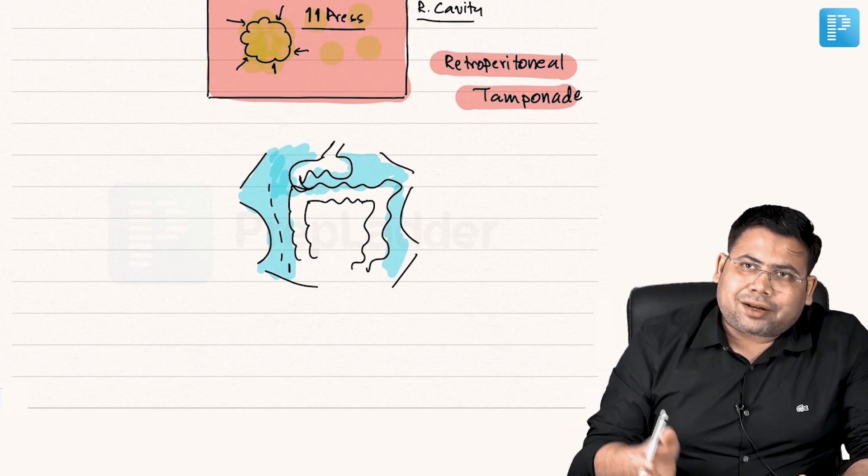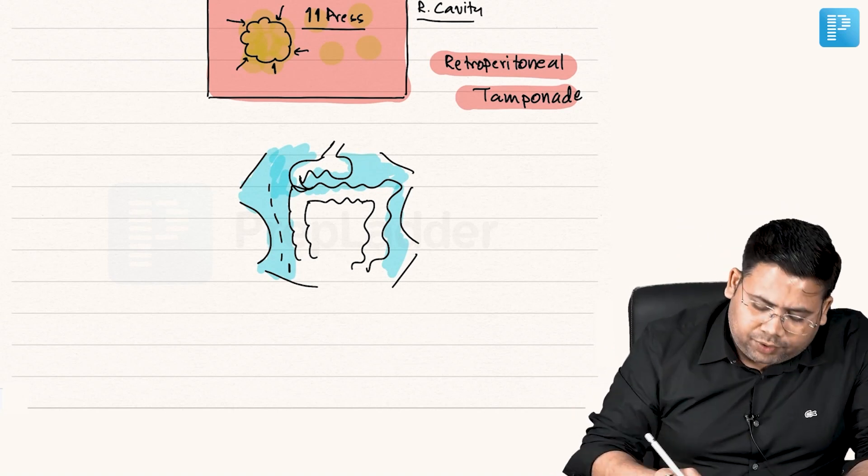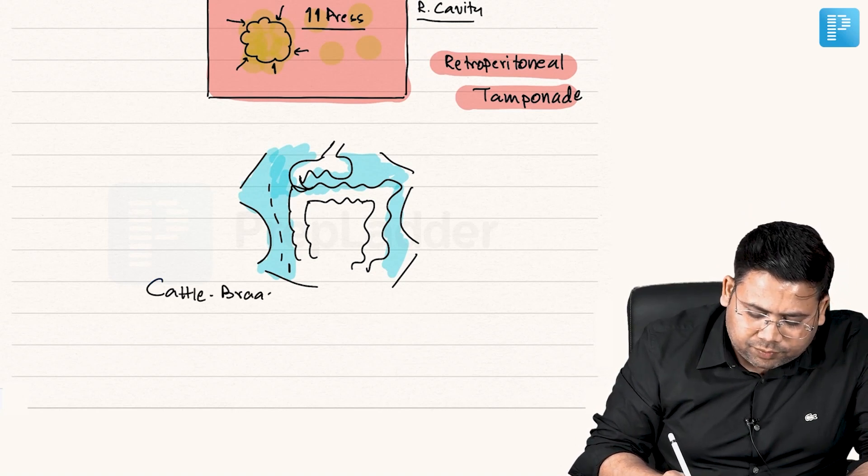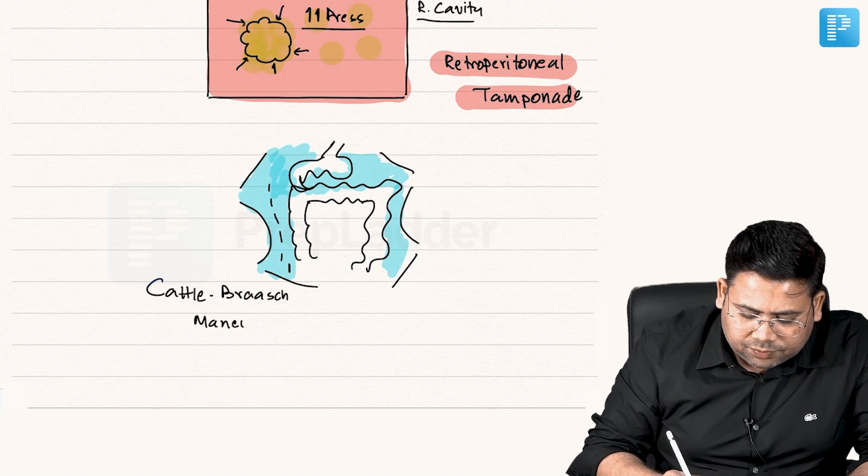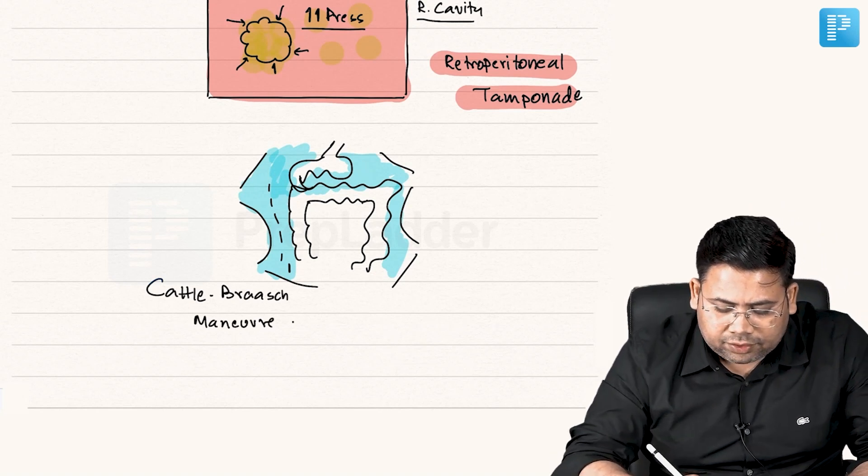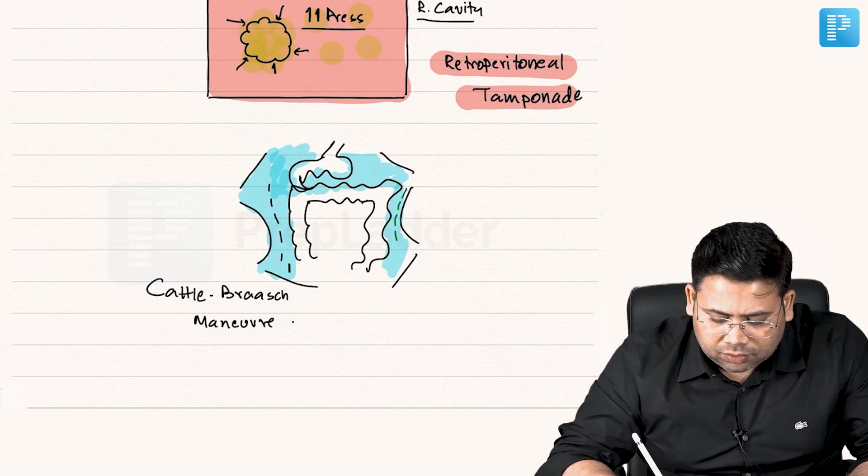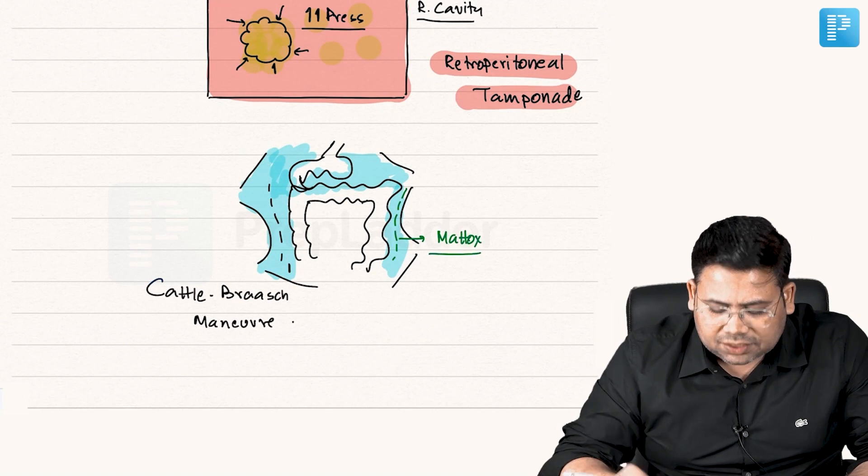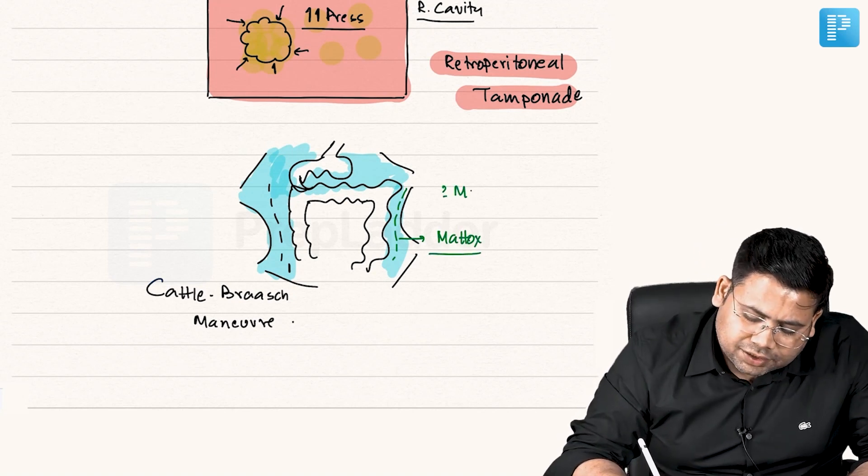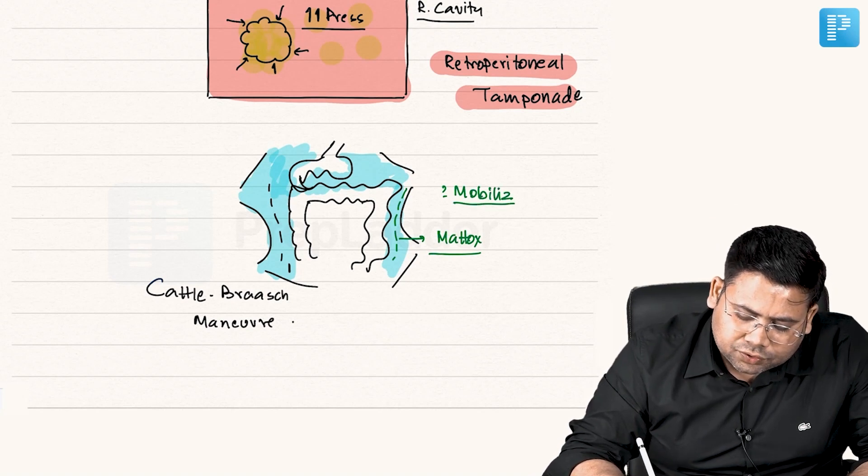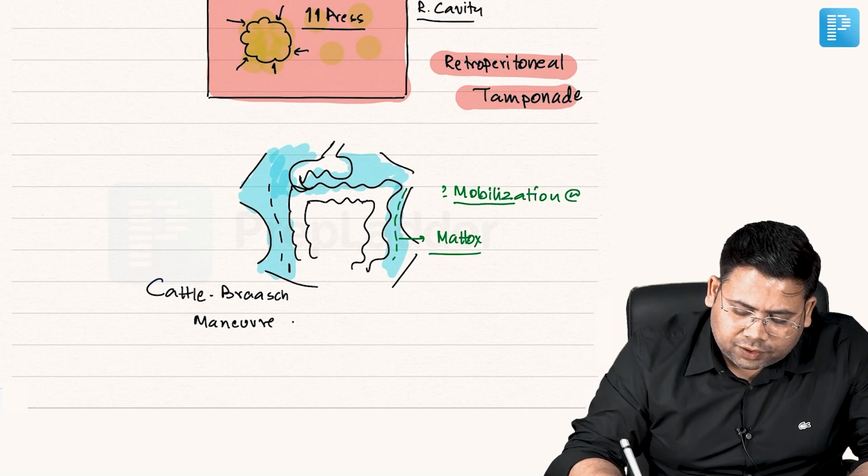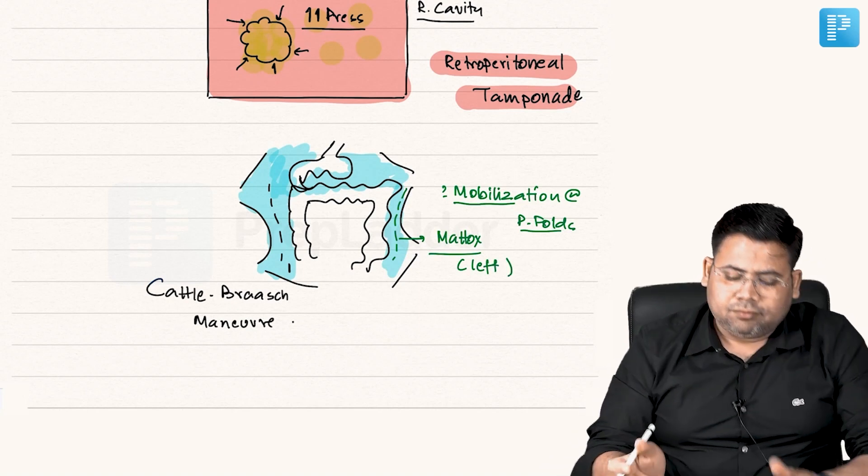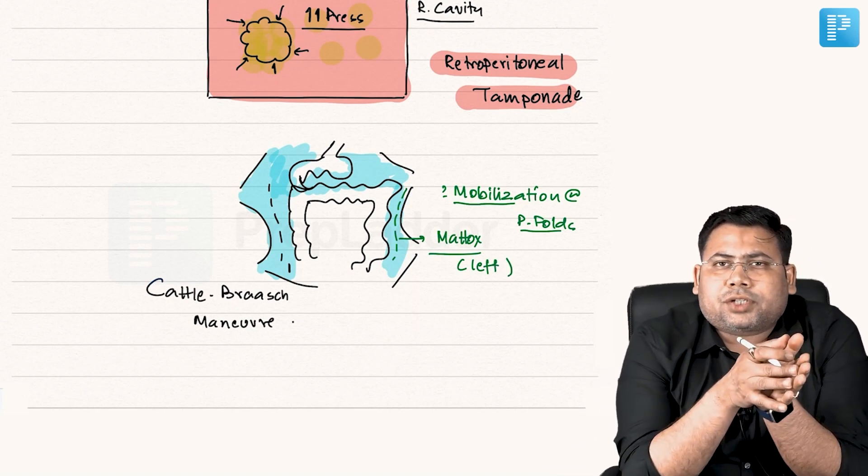If you want to go on the right side of the retroperitoneum, like if you want to do hemicolectomy, you have to do a Cattell-Braasch maneuver. This is Cattell-Braasch maneuver. On this side, if we do it, the very same thing, this is known as Mattox maneuver. What are they actually? They are mobilization of the peritoneal folds. Mobilization of peritoneal folds on the left, that is Mattox. Left medial visceral rotation is Mattox. Right medial visceral rotation is Cattell-Braasch.